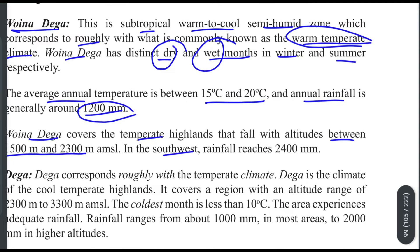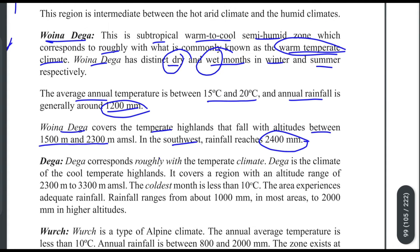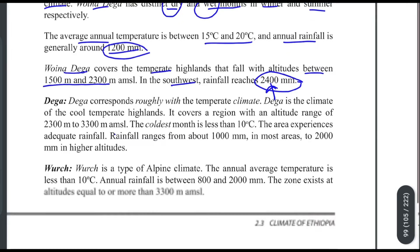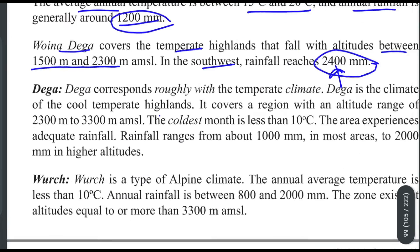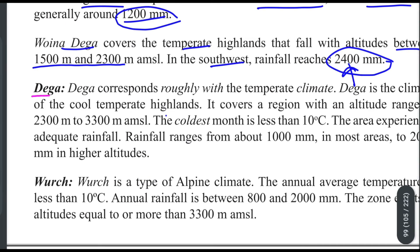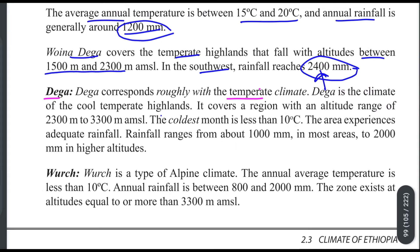In the southwest, rainfall reaches 2,400 millimeters. The total annual rainfall of around 2,000 millimeters corresponds roughly with the temperature characteristics of this climate zone.